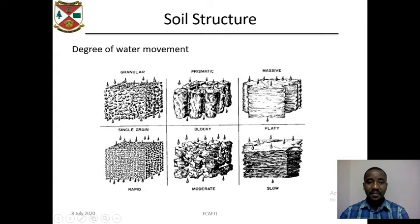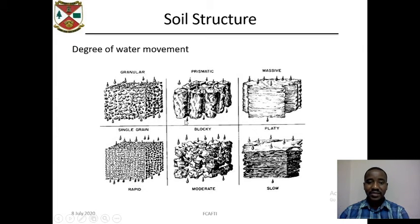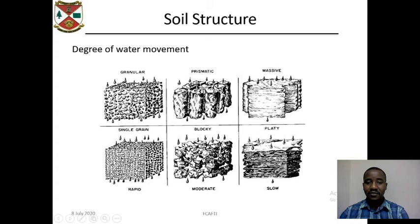This diagram shows the degree of water movement in six structures: granular, prismatic, massive, blocky, platy, and single grain. Water moves very easily in granular structure, which is good for crop production. Water does not move as easily in prismatic, and moves very difficultly in massive structure. In single grain, water moves very fast but the ability to hold water is very poor. Water movement in blocky is moderate, and in platy is very slow.